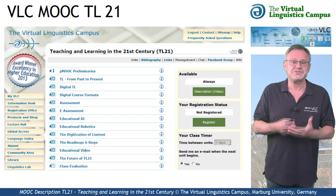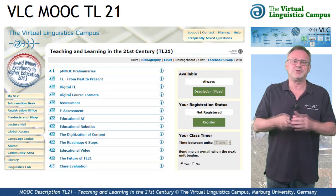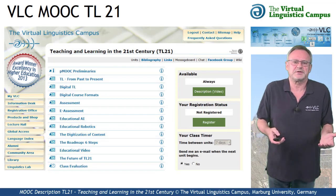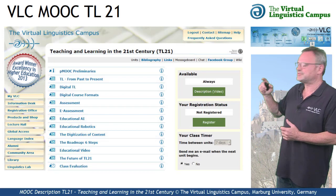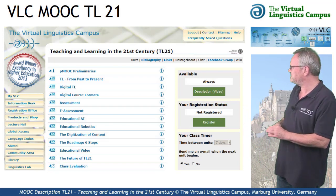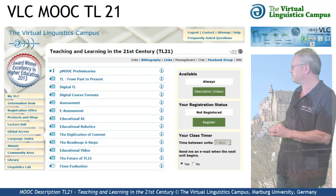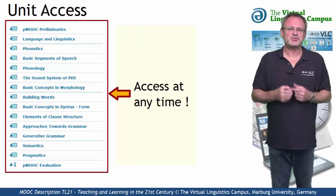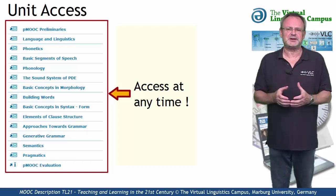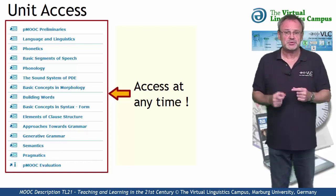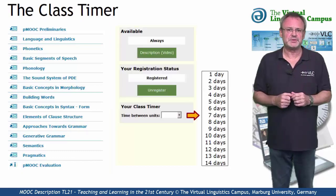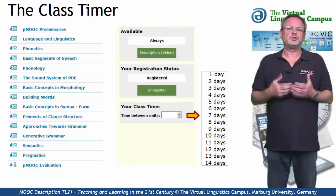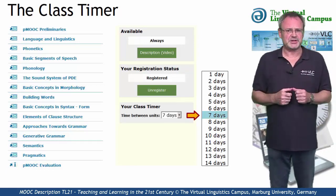Furthermore, and this is a novelty in the world of online courses, your class is a PMOOC — a permanent MOOC. But how does it work? Here are the central principles of using a PMOOC on the Virtual Linguistics Campus. Central to our PMOOCs is the idea that you have access to all units of a class at any time. However, if you wish, you can also define your own fixed rhythm using the class timer. Let's say you want to go through the class on a weekly basis — then select the 7 days rhythm.